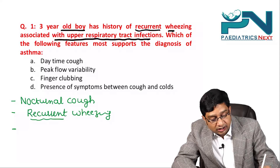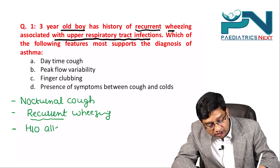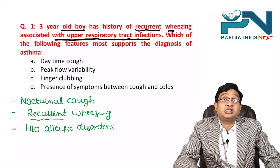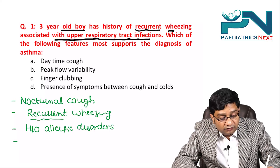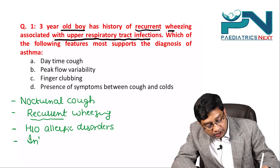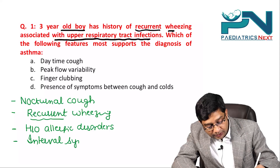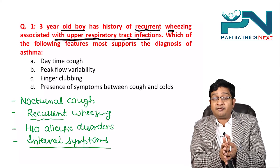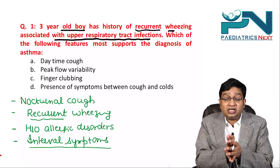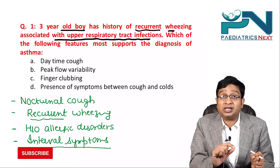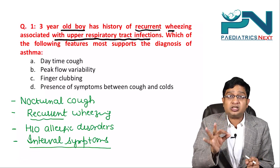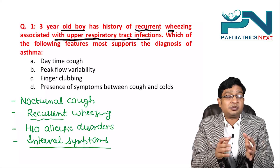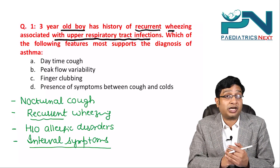Third, history of allergic disorders, for example allergic rhinitis, is a point in favor of asthma. Fourth, and very very important, is the presence of interval symptoms. The meaning of interval symptoms is that the child is having wheeze even without cough and cold — wheeze is not only present with cough and cold, but is present even without it. This supports the diagnosis of asthma.